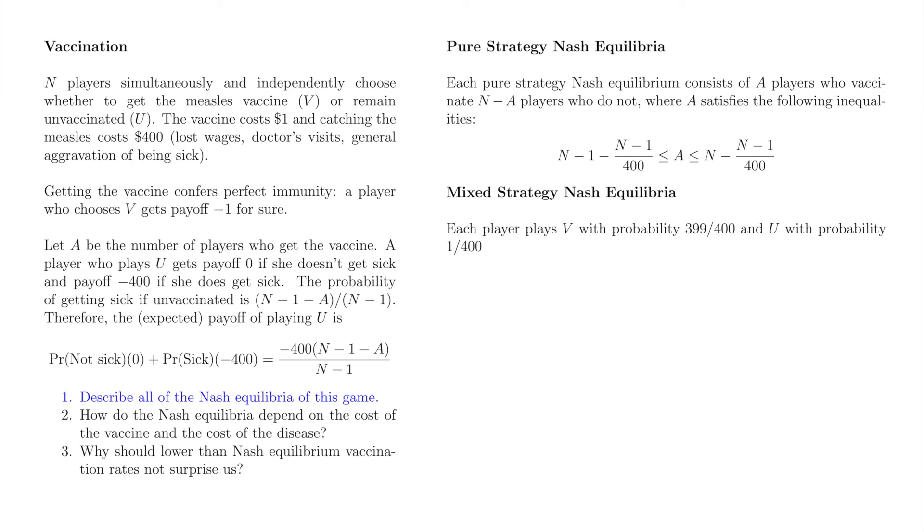Both the pure and mixed strategy Nash equilibria lead us to the same conclusion about the Nash equilibrium vaccination rate. The pure strategy Nash equilibrium vaccination rate is A over N. As N approaches infinity, A over N approaches 399 out of 400.